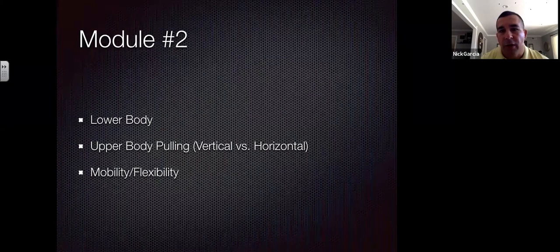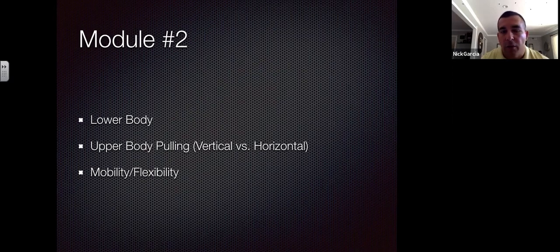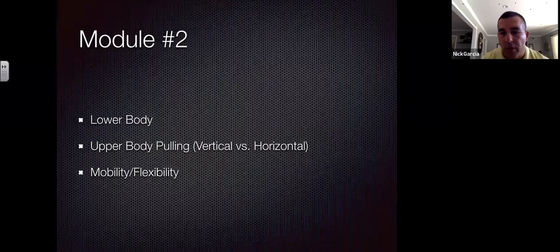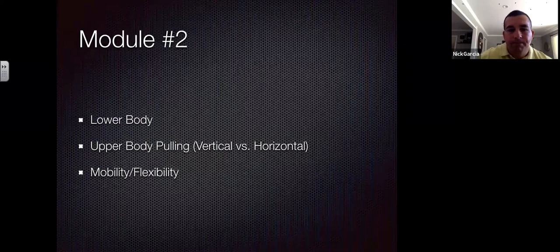Module two follows the same format — you can think of each module as a tri-set or superset. In module two we go to a lower body lift: on a sagittal day, a front squat or hex bar deadlift variation. Then an upper body pulling variation — alternating vertical and horizontal pulling movements to stay in balance. Finally, mobility and flexibility based on team trends or individual needs.